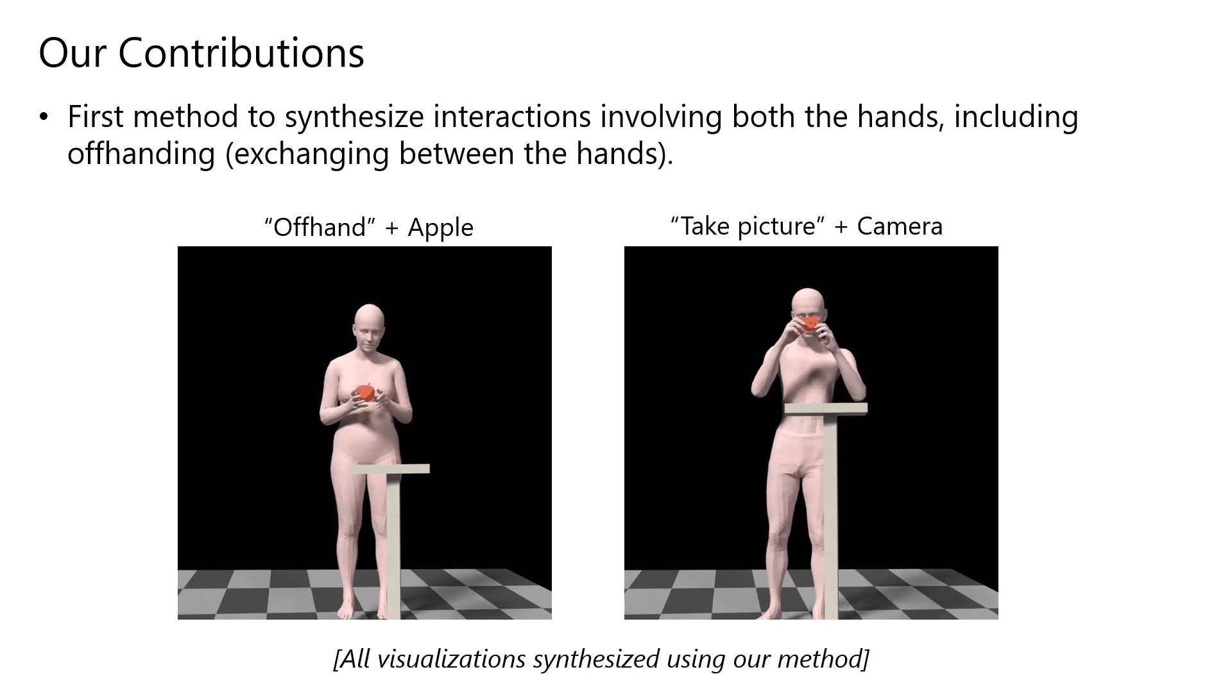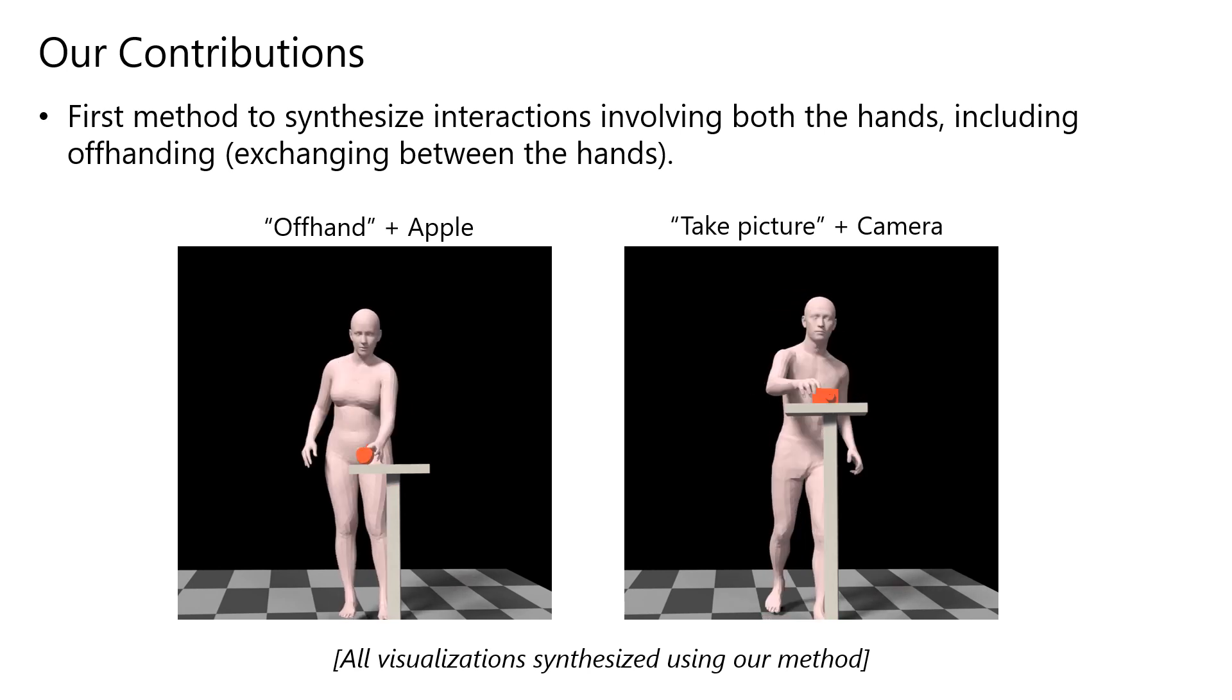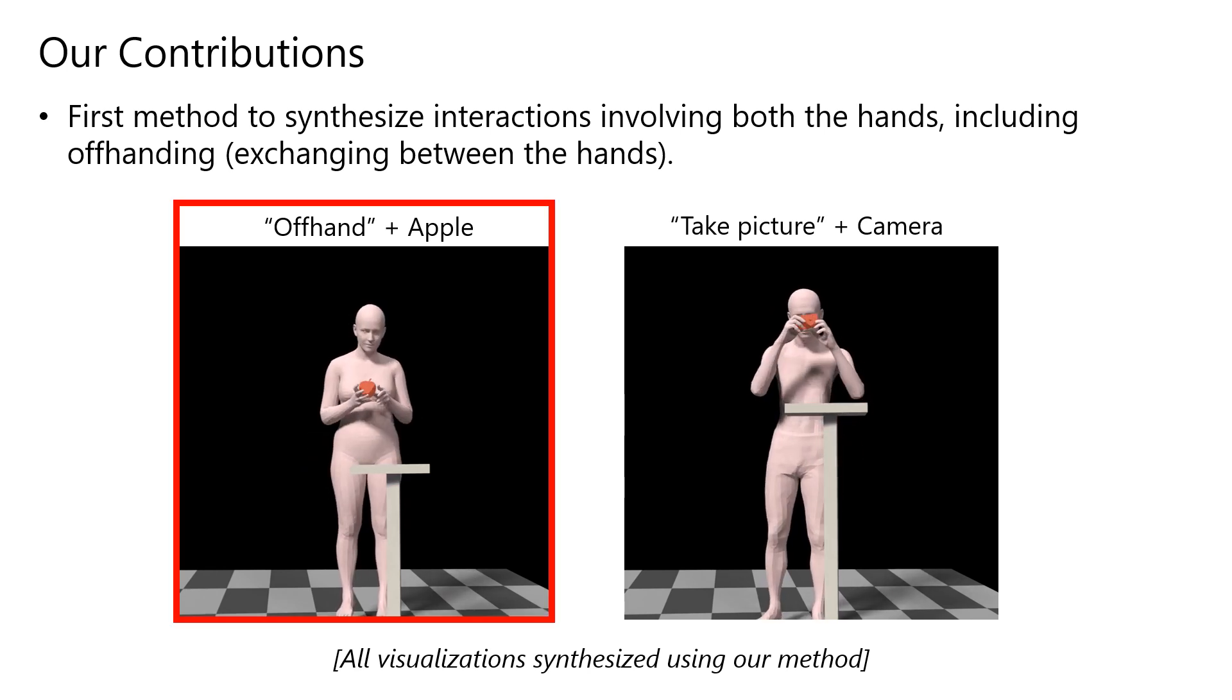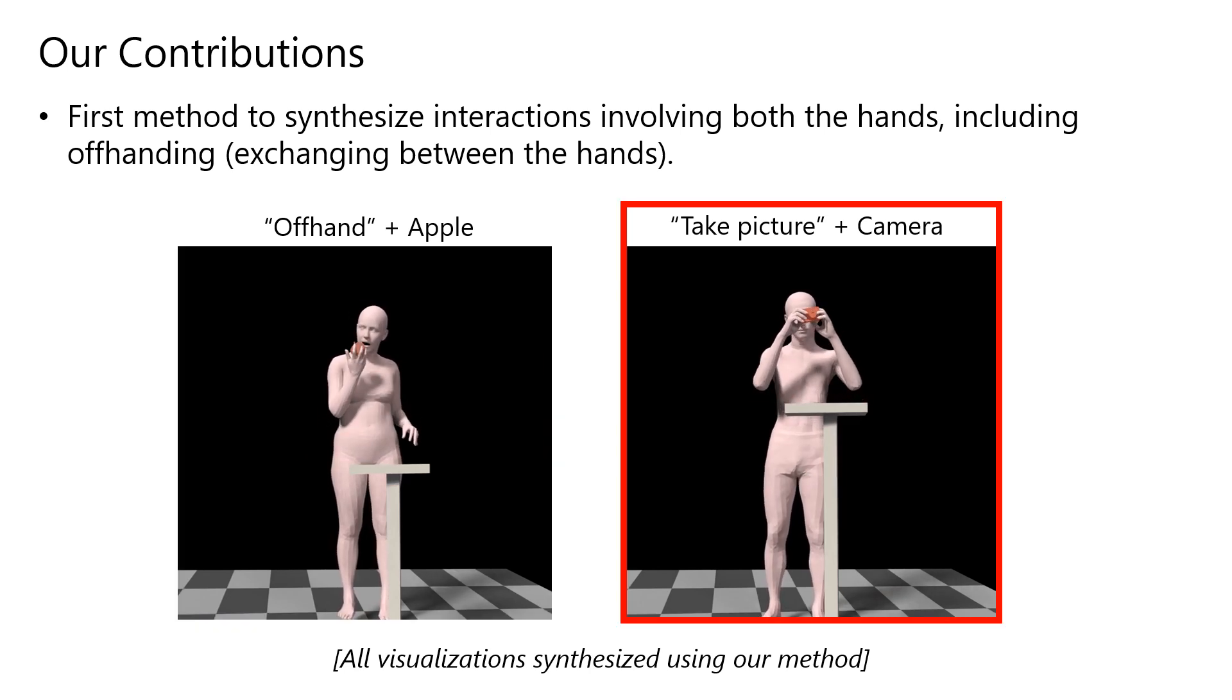We place special focus on synthesizing interactions involving both hands. This also includes sequences where the object is exchanged between the hands, a setting that hasn't been addressed before. For instance, we see a sequence where a person exchanges an apple from one hand to another, and another example showing a person holding a camera with both hands for taking pictures.